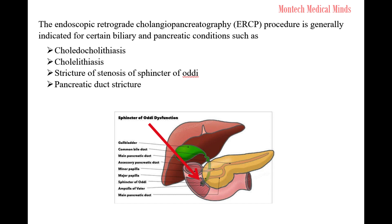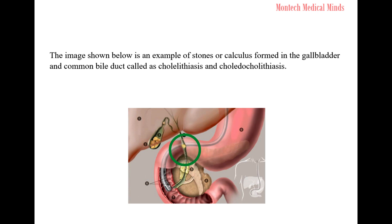The ERCP procedure is generally indicated for certain biliary and pancreatic conditions such as choledocholithiasis, cholelithiasis, stricture or stenosis of the Sphincter of Oddi, and pancreatic duct stricture. The image below shows an example of stones or calculus formed in the gallbladder and common bile duct, referred to as cholelithiasis and choledocholithiasis.